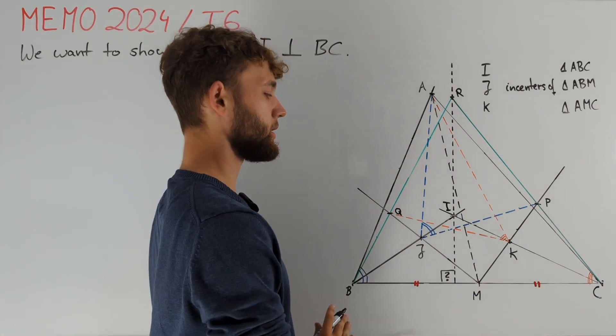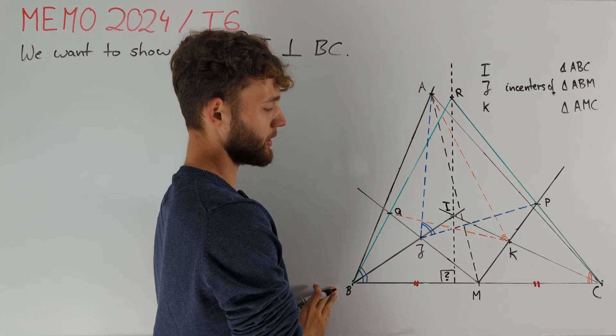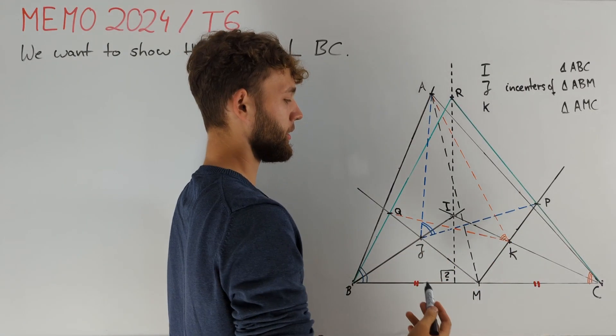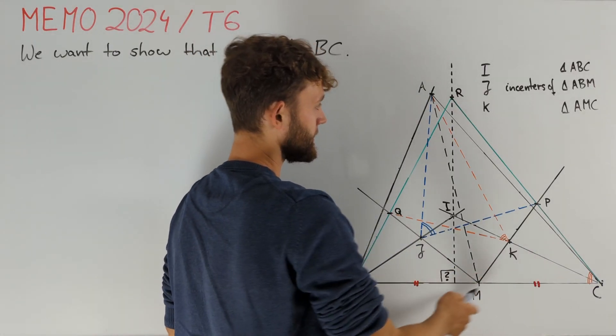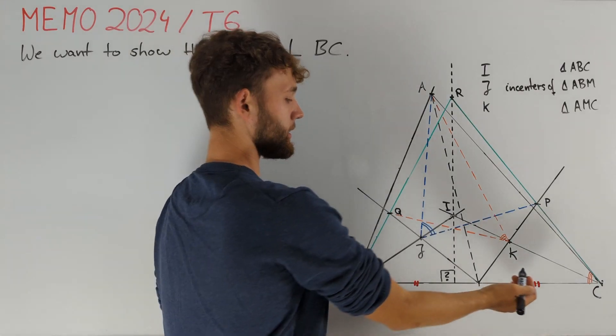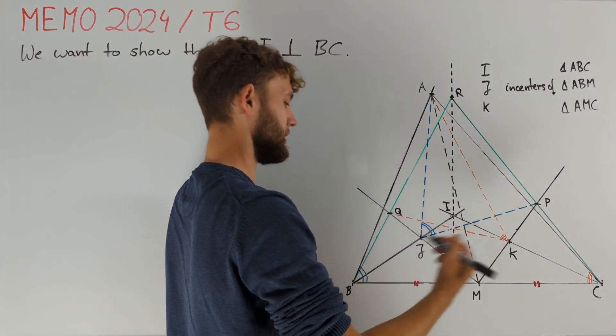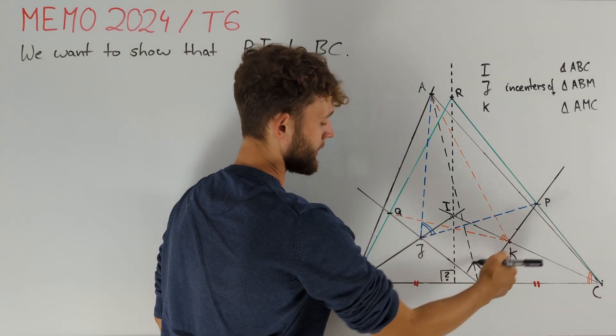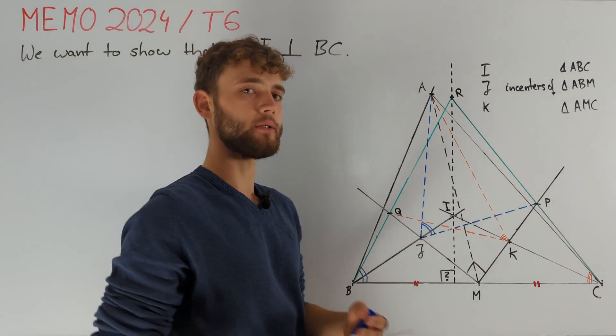First of all let's try to find some nice angles in this picture. We notice that K and J lie on the angle bisectors of angles CMA and AMB respectively. And since angle CMB is 180 degrees it follows that this angle here angle KMJ is equal to 90 degrees.